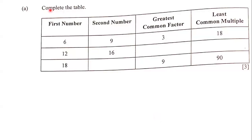Our goal is to complete the table. Notice that this table is not complete because there are some empty spaces. We have to complete the table. Let's look at the first and second number on the first row. The first number is six and the second number is nine.